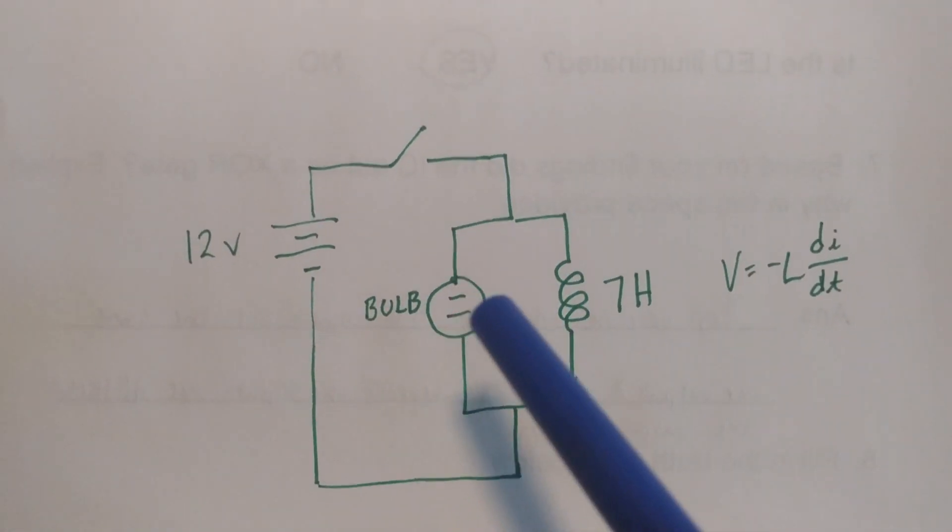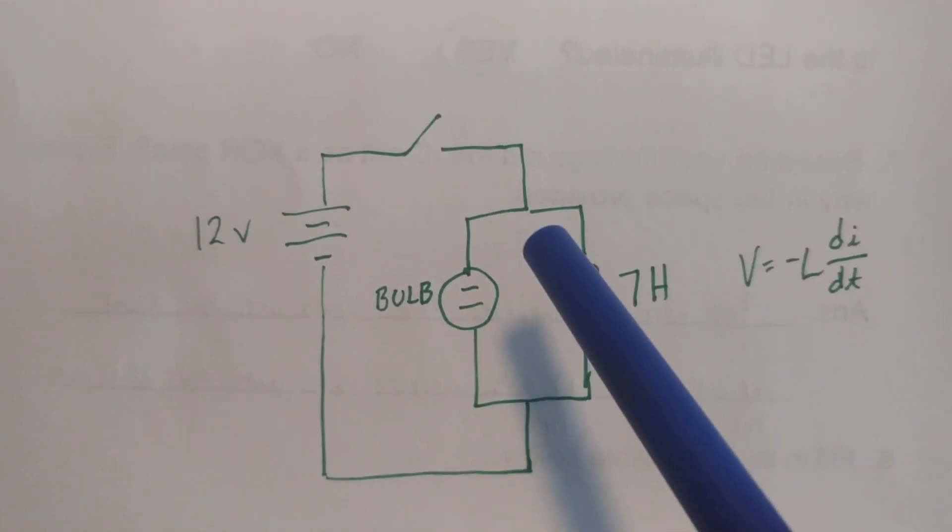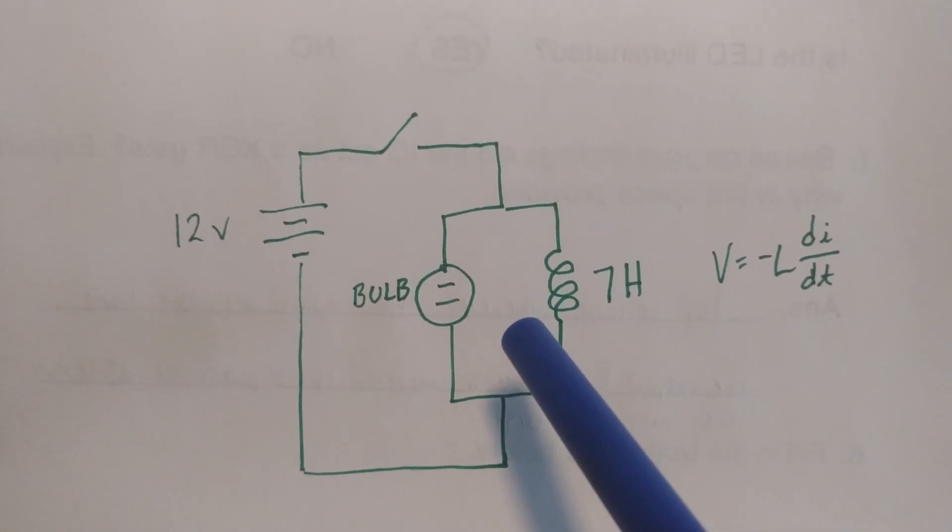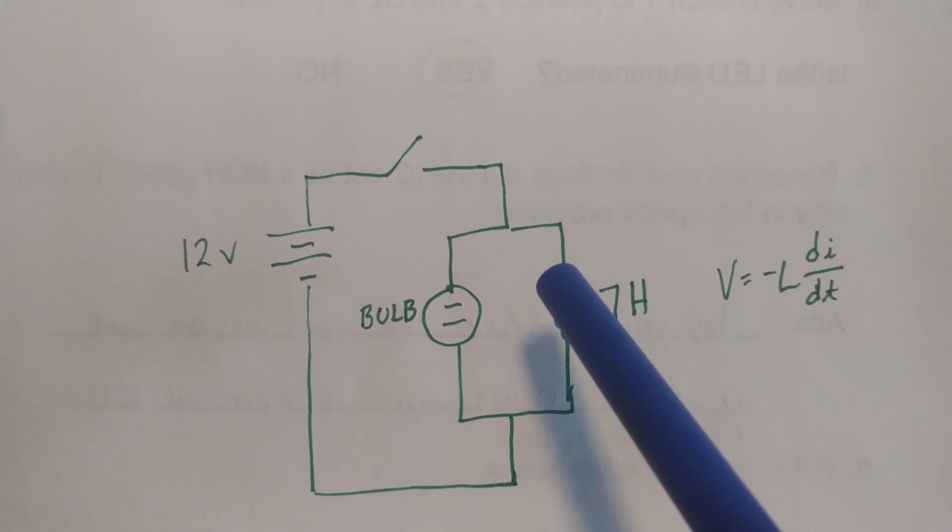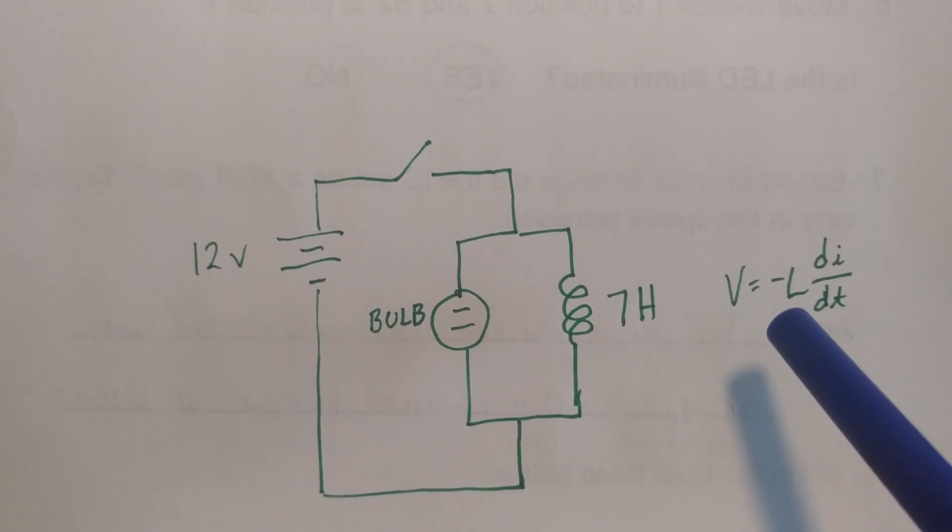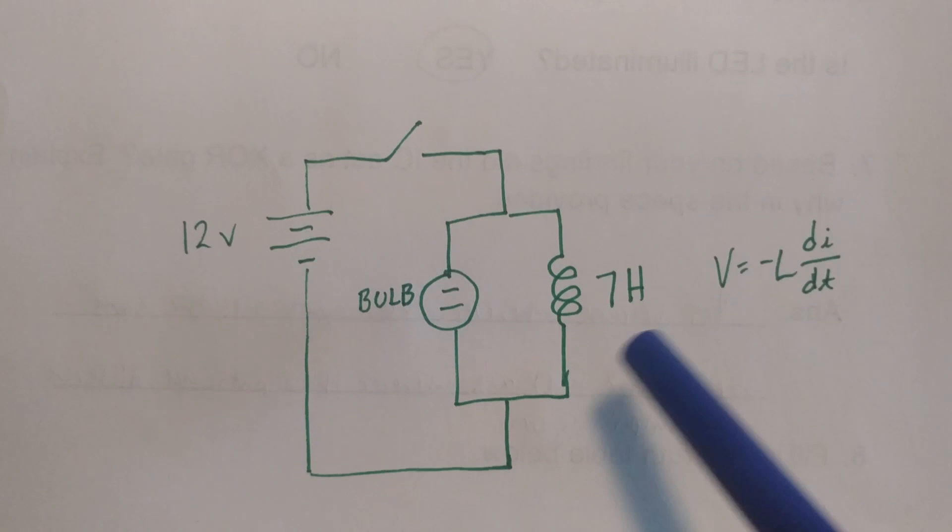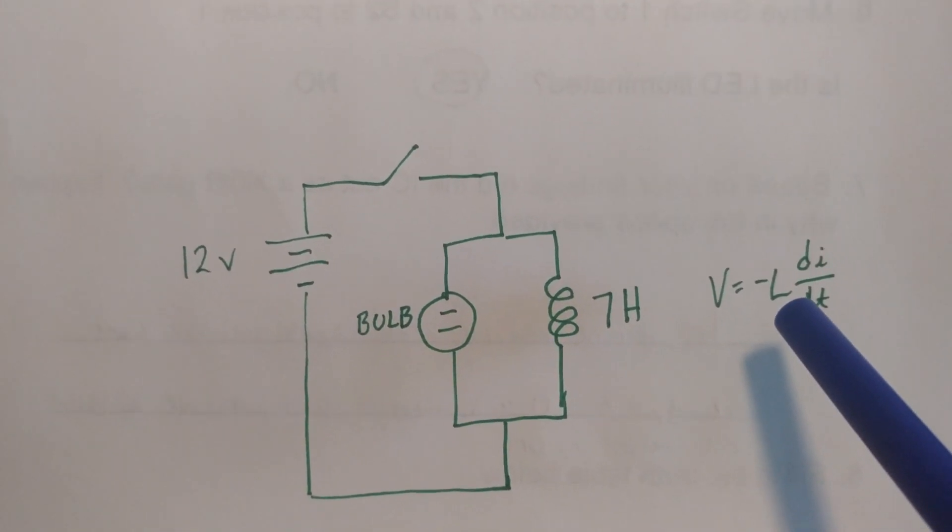Now when I open up the switch well I still have a circuit here so what happens is there's an immediate change and the current flows in the other direction. So if you look at the equation here for the voltage across the inductor it's negative L which is the seven Henrys times di dt.